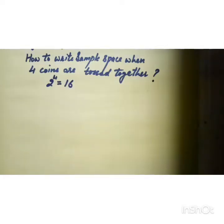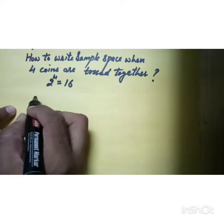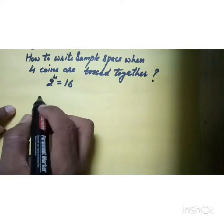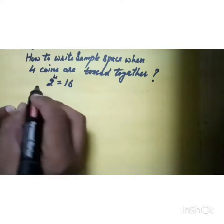Friends, today I'll show you how to write the sample space when four coins are tossed together. When four coins are tossed together, the total possible outcomes will be 2 raised to the power 4, that is 16. Half of 16 is 8, so we are to write 8 times H, then 8 times T.